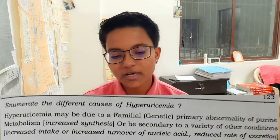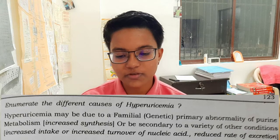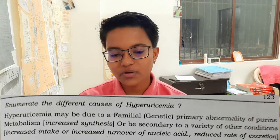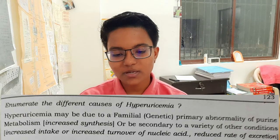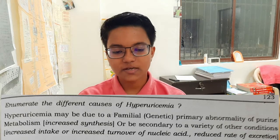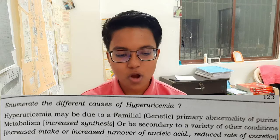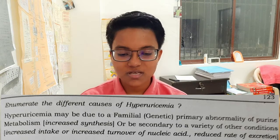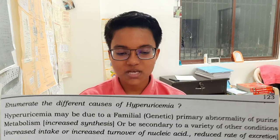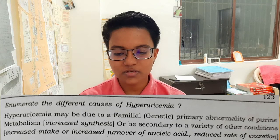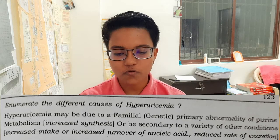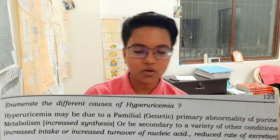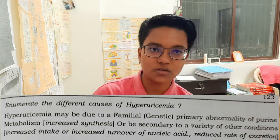Enumerate the different causes of Hyperuricemia. Hyperuricemia may be due to a familial or genetic primary abnormality of Purine Metabolism, increased synthesis secondary to a variety of other conditions, increased intake or increased turnover of Nucleic Acid, or reduced rate of excretion.